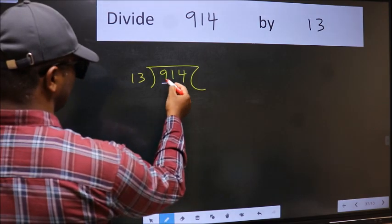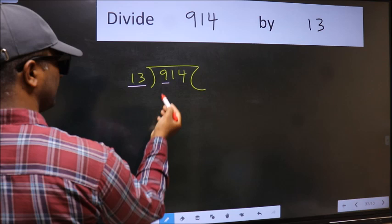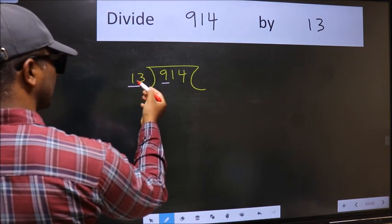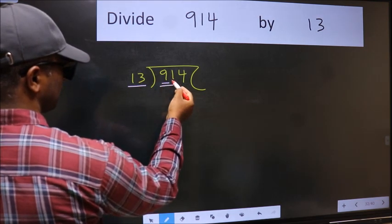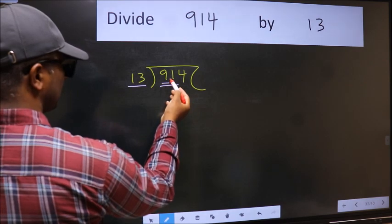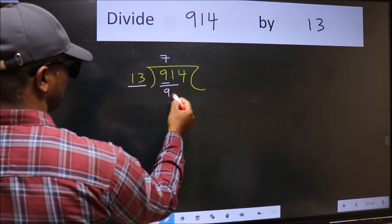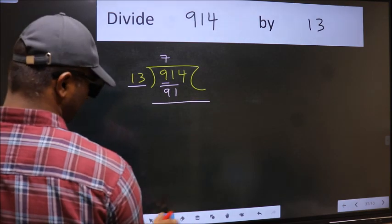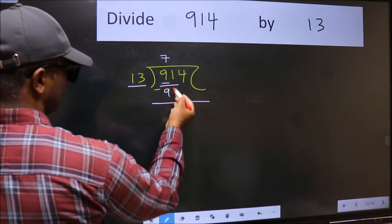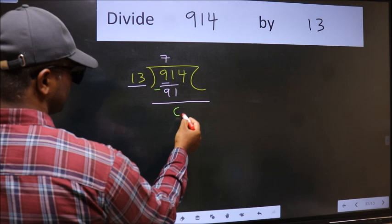Here we have 9 and here 13. 9 is smaller than 13. So we should take two numbers, 91. When do we get 91 in 13 table? 13 times 7 is 91.